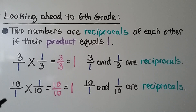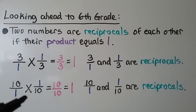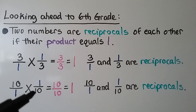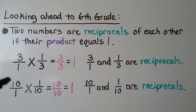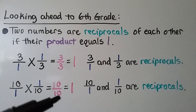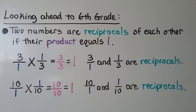We can even do it with the number 10. We write it with a denominator of 1, then multiply it by its flipped upside-down version, 1 tenth. 10 times 1 is 10, and 1 times 10 is 10 — we have 10 tenths, which equals 1 whole. So 10 over 1 and 1 tenth are reciprocals of each other.